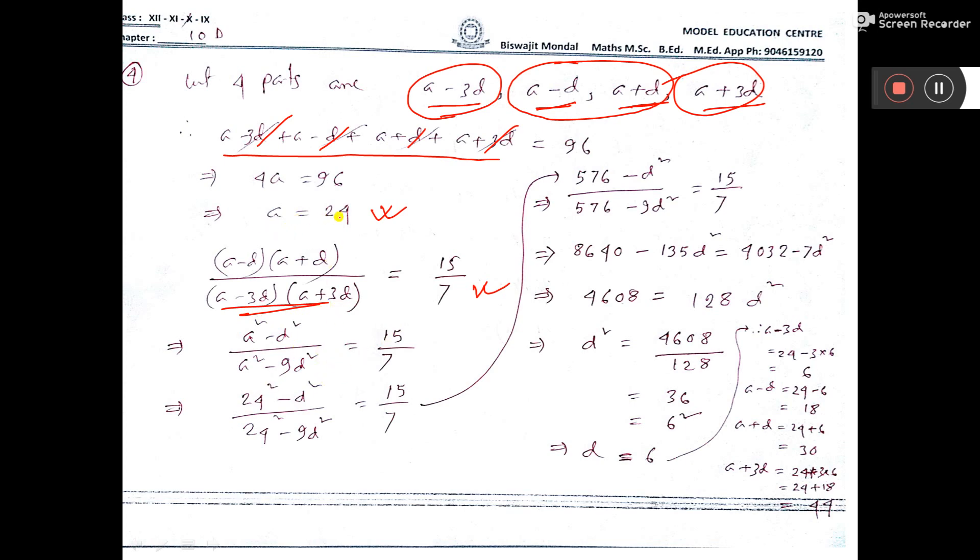Now already value of a we have got, so put it. Now do cross multiplication and solve and get the value of d. Here it is 6 squared, you see, 6. So the value you put, a and d here and get the numbers. That's all.